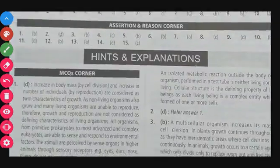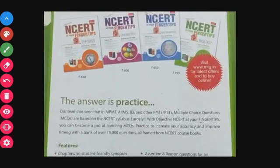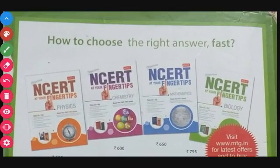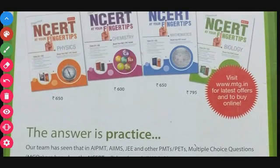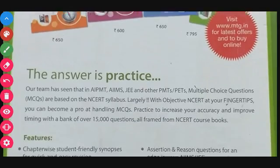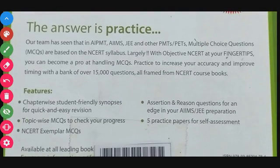You can read the hints and explanations provided. The last page also shows other MTG books available — Physics, Chemistry, Maths, Biology for NEET students, and Physics, Chemistry, Mathematics for JEE students. You can buy them online at www.mtg.in. This book has over 15,000 questions in its question bank. Practice is the key to choosing the right answer fast.